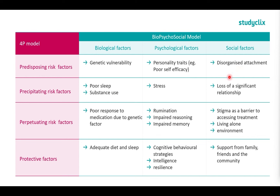Moving on to the precipitating risk factors — what triggers the onset — we have poor sleep and substance abuse as biological factors. We also have stress as a psychological factor, and loss of a significant relationship as a social factor. So across those three categories, we have different things that may trigger the onset of mental health disorders.